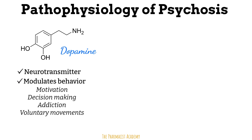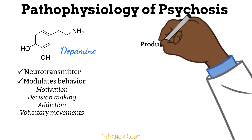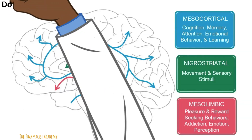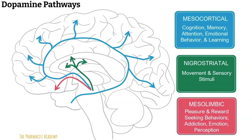Let's see how dopamine executes these functions on the cellular level by learning about dopamine pathways. Dopamine is produced in three main parts of the brain: the ventral tegmental area (VTA), the substantia nigra, and the hypothalamus. For dopamine to function, it moves from where it's produced to a target area in the brain via neurons — this movement is what we call a dopamine pathway.